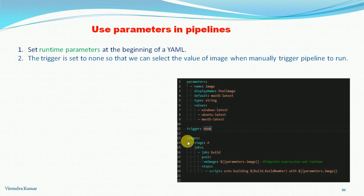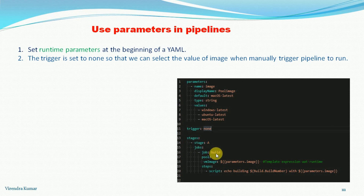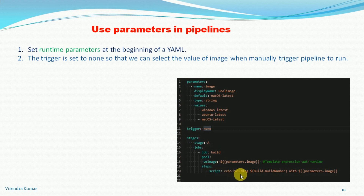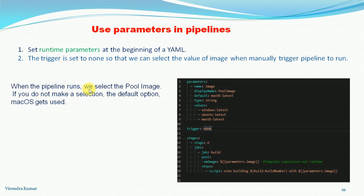Now under these stages, we want to utilize this parameter. We define some stages — hyphen stage A — then we have some jobs. This is called the build job. In the build job, we have the pool, and the pool VM image is set using template expressions at runtime. When the pipeline runs, we select the pool image. Otherwise, if we do not make a selection, the default option will get used.